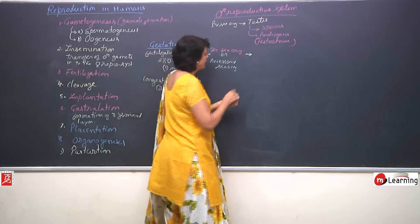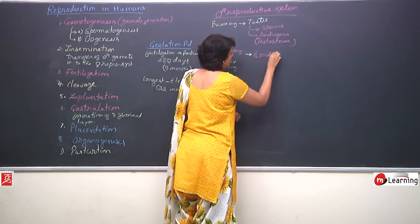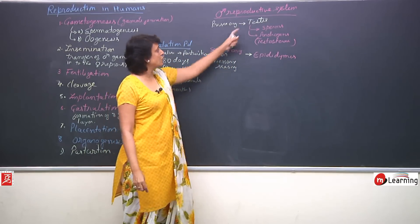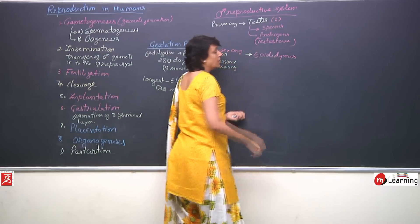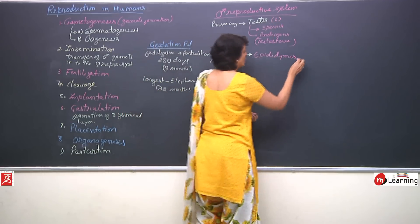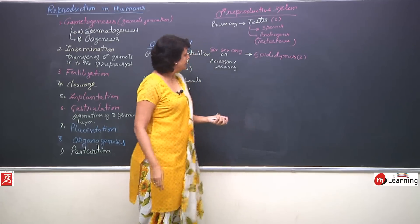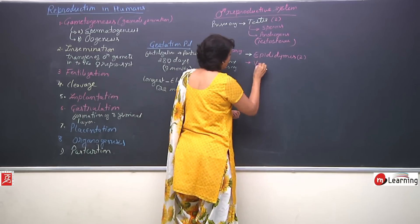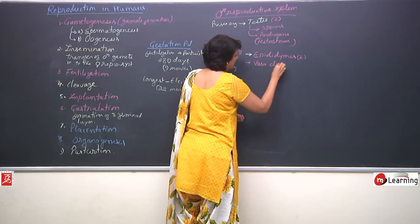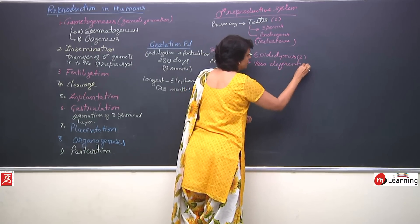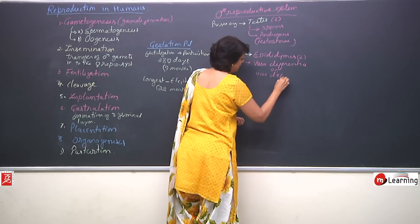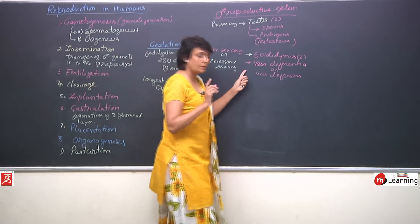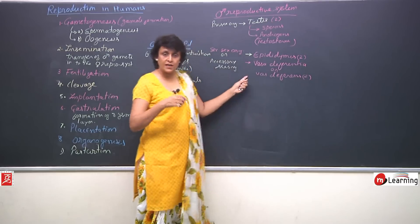There is epididymis, one with each testes or pair of testes let us write down the numbers here. It is 2 in number, epididymis also 2. Then a duct which carries these sperms it is known as vas deferens or vas difference. Again a pair, one from each epididymis this duct arises.